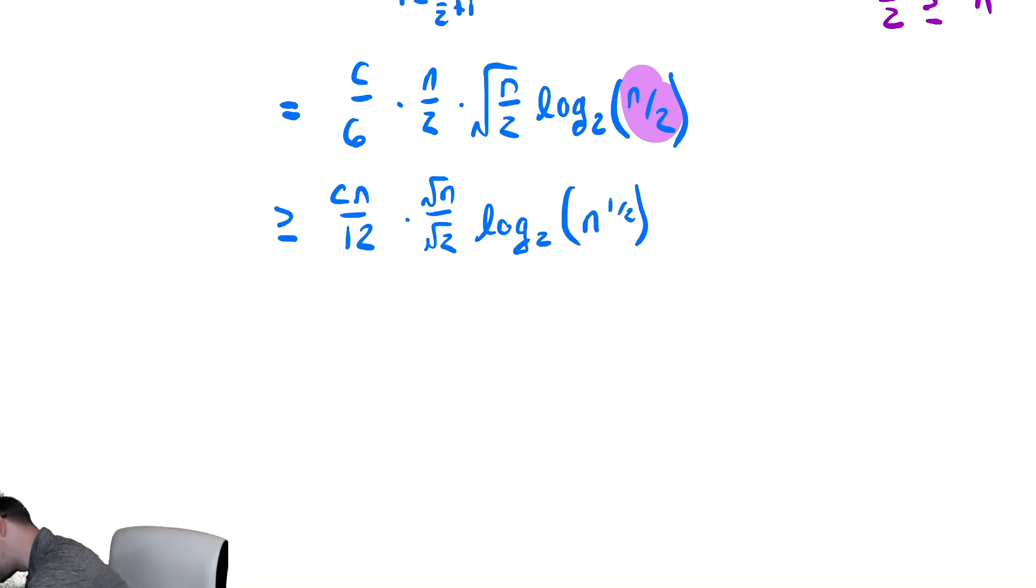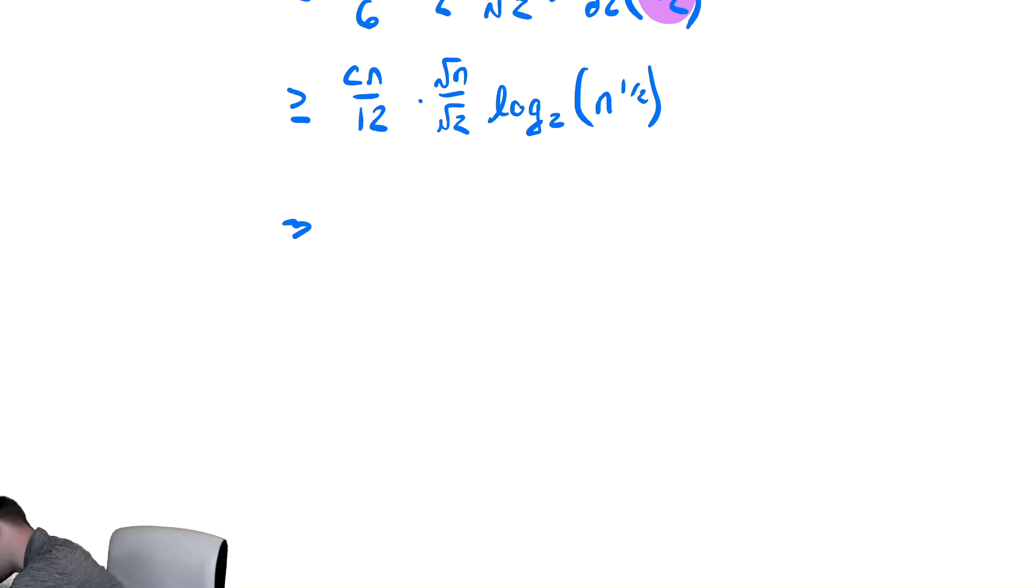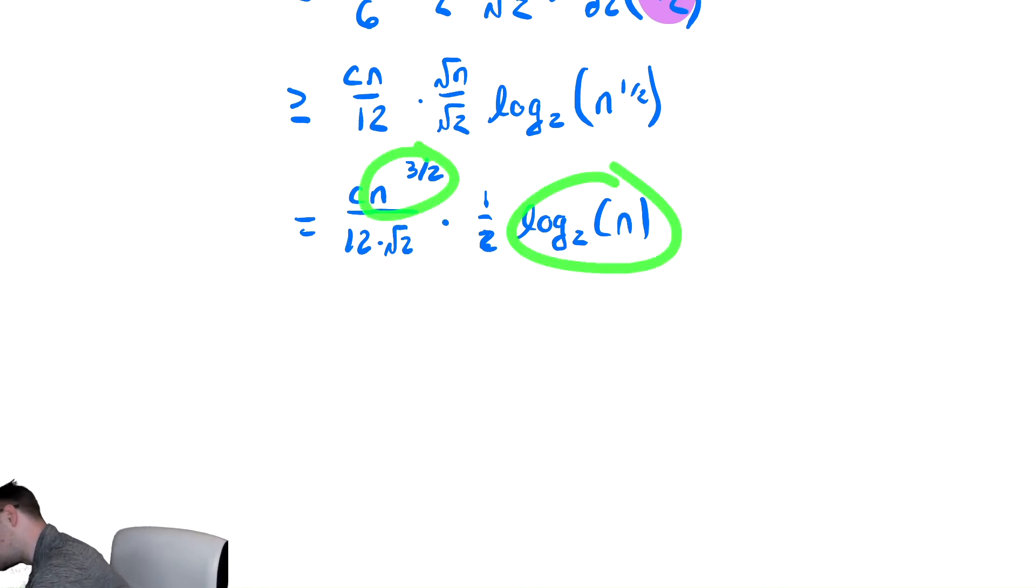And now we've got a sort of mess of constants to contend with. We have that this is equal to cn to the three halves when we take the n times radical n. Then we have 12 times radical two times when we bring the one half out front, that's another one half log base two of n.